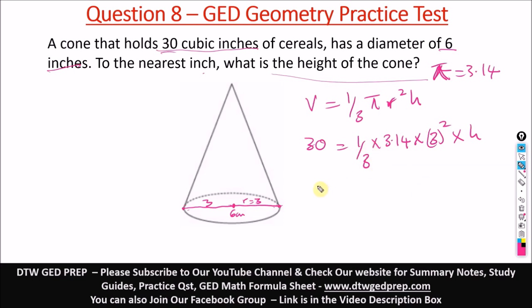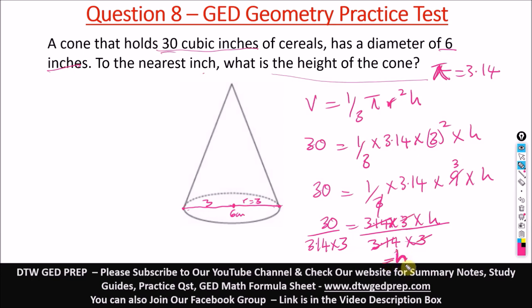From here we have 30 is equal to 1 over 3 times 3.14 times 3 squared is 9 times h. I can cancel out 3 here. I'm just breaking this down for simplification, but you can just use your calculator. So 3 will be here. So from here we are left with 30 is equal to 3.14 times 3 times h. So I would divide both sides by 3.14 times 3. This would cancel out. We are left just here with h. That's the goal to make h stay alone, stand alone, the unknown, stand alone on one side of the equation.